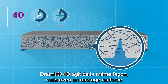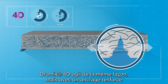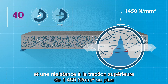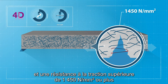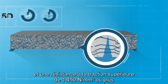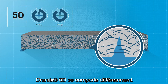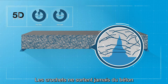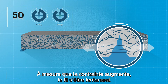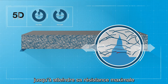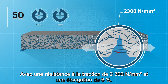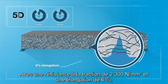Dramix 4D provides the same process, but with even better anchorage and a significantly higher tensile strength of 1,450 N per square millimeter or more. Dramix 5D behaves differently altogether. Here, the hooks never pull out from the concrete. As the stress increases, the wire slowly elongates until it reaches its maximum strength.